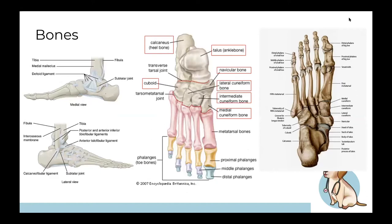Now for the foot bones — very similar to the bones of your hand. You have tarsal bones and metatarsals, like the metacarpals and carpal bones, and then proximal, middle, and distal phalanges, except there's no middle phalange on your big toe. There are seven tarsal bones altogether — remember them as the four C's, the navicular, and the two big bones at the back.